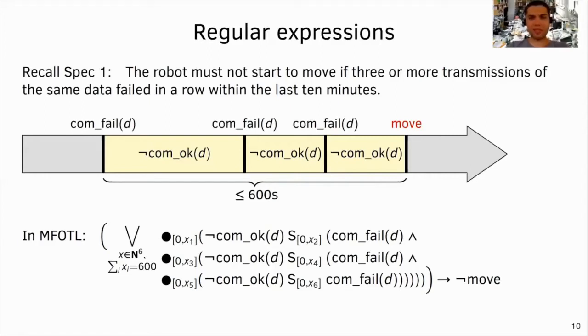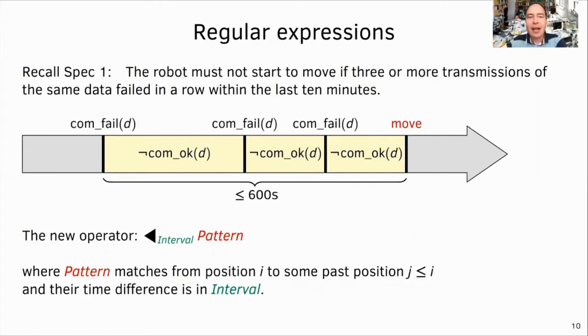Also, we are lucky that discrete timestamps are sufficient for the specification. Otherwise, this formalization would just not work. The problem is that this temporal pattern requires us to both nest temporal operators and ensure that the overall time interval is within 10 minutes. Here is an elegant solution. What if we could use regular expressions to express temporal patterns? This new operator is called past match and it allows us to write temporal patterns as regular expressions and specify the overall time interval that matches must satisfy. In the case of this past match operator, the pattern matches the current position i to some past position j.